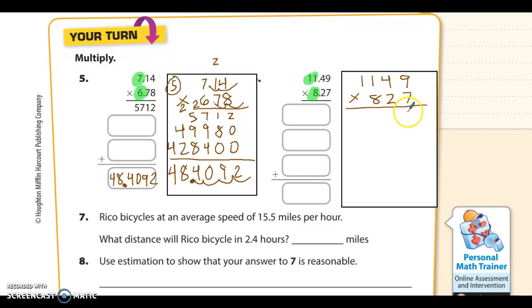Alright. 7 times 9 is 63. 7 times 4 is 28, plus 6 is 34. 7 times 1 is 7, plus 3 is 10. 7 times 1 is 7, plus 1 is 8.